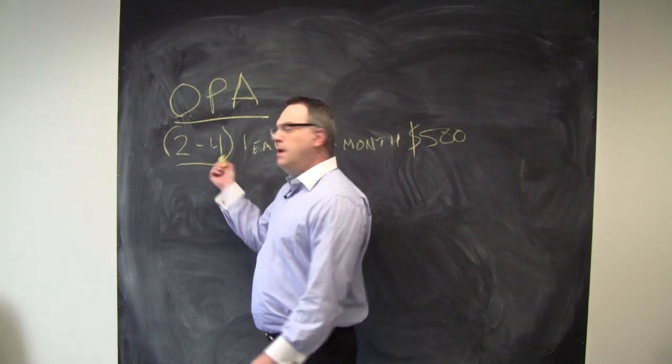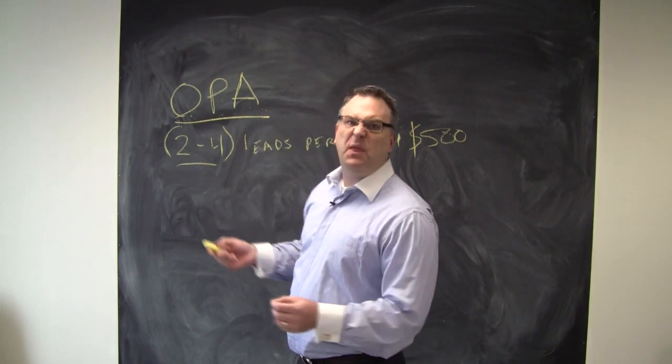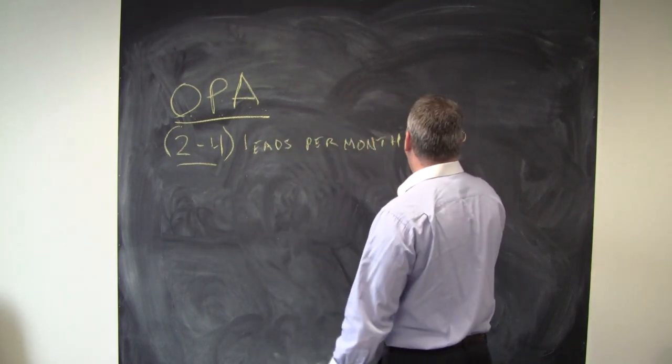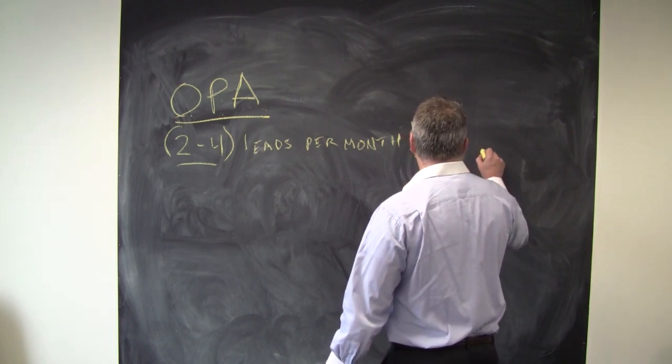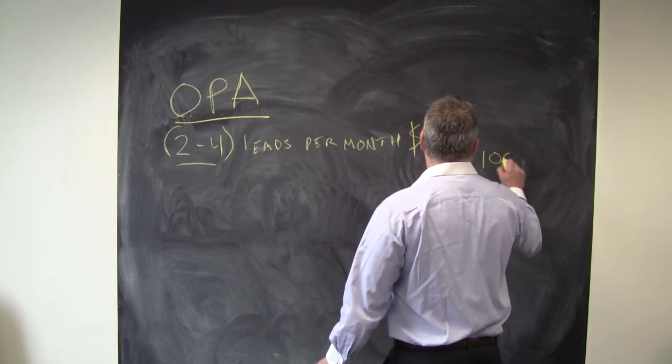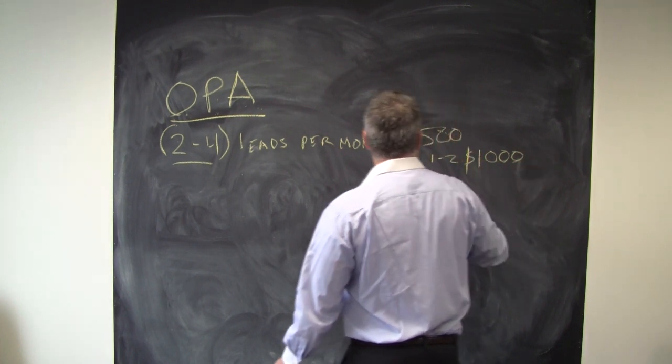So out of the two to four, how many should you close? Let's just say thirty percent. So let's just say between one to two. So basically that's about a thousand dollars of additional income.